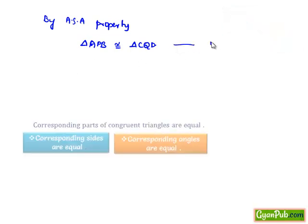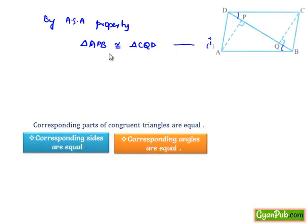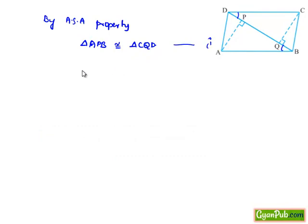This is our first proof required. Now by applying the concept that the corresponding sides and corresponding angles of two congruent triangles are equal, we can equate the two corresponding sides: AP is equal to CQ, which is our second proof required.